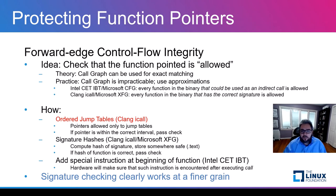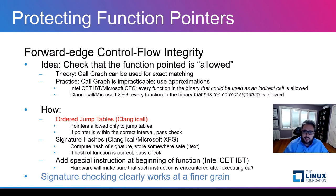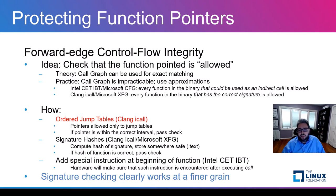Let's focus now on how to protect function pointers. The common approach is to use forward edge control flow integrity. Simplistically, the idea is to check that the function pointed to is a correct or allowed function. The main problem is how to define allowed functions. In theory, we could use a call graph that would give us an exact match, but this is not feasible, so we have to use approximations. The two most common approximations are to either consider every function in the binary as allowed — which is what Intel CET or Microsoft CFG do — or to consider as allowed only functions with the correct signature, which is what Clang uses in their iCall protection.